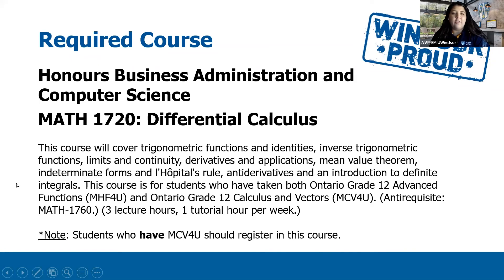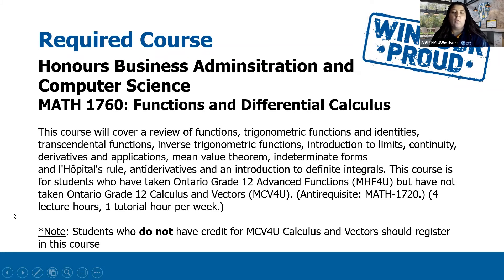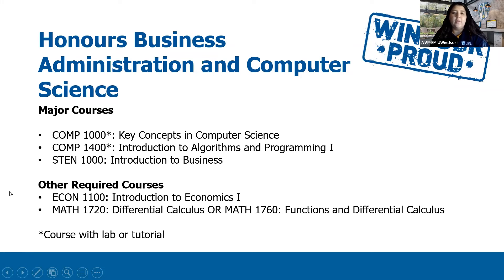And lastly, you'll also need to register in a calculus course. Again, which one you choose will depend on your background from high school. If you took Grade 12 Calculus, you would register in Math 1720 Differential Calculus, and if you did not take Grade 12 Calculus, you would instead register in Math 1760 Functions in Differential Calculus. So to review, you will need to register in Key Concepts in Computer Science, Introduction to Algorithms and Programming 1, Intro to Business, Intro to Economics 1, and one of these two calculus courses depending on your calculus background from Grade 12. And then you'll be all set and registered for your first semester of university.